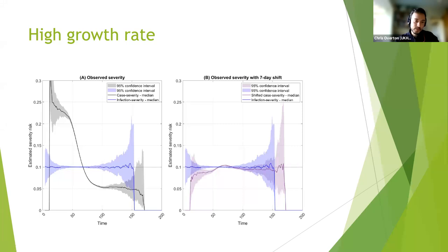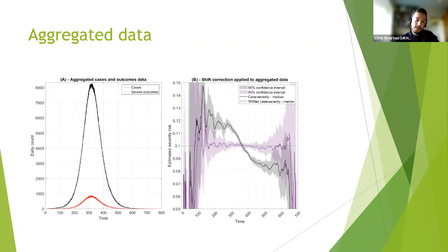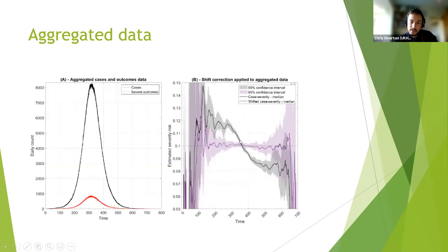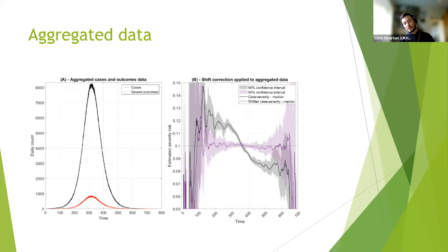With aggregated data we can do the same thing. Applying the shift correction to aggregated data in the low growth rate scenario, the purple curve again corrects the bias, but doesn't work quite as well as with line-list level data. This is because we're making two levels of approximation — first approximating case severity from aggregated data, then approximating the shift correction from aggregated data. So performance is worse with aggregated rather than individual-level data.